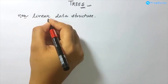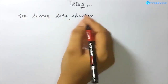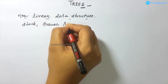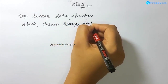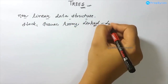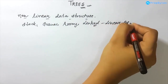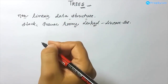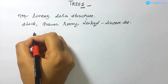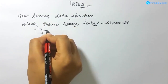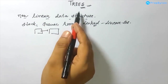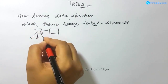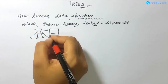As noted, trees are a non-linear data structure. Till now we have studied stack, queues, arrays, and linked list — all of these are linear data structures. Whereas a tree is non-linear. In a linked list, one node used to point to another node in a linear fashion, but in a tree, a particular node can point to n number of nodes. This is an example of a non-linear data structure.